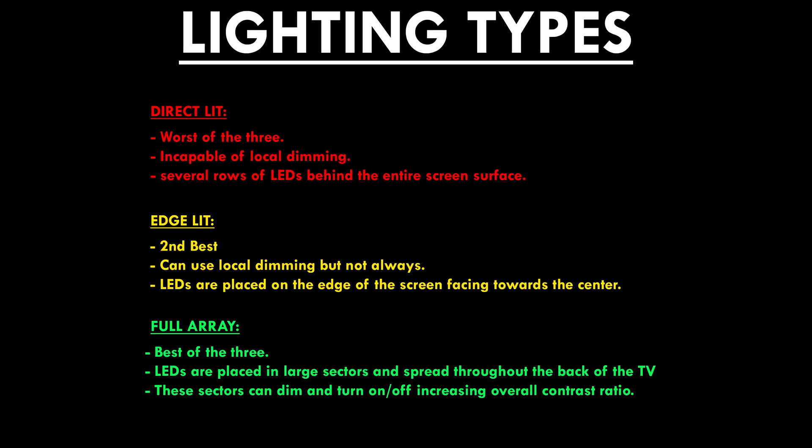Next are the lighting types. There are three types: direct lit, edge lit, and full array. Direct lit uses several rows of LEDs behind the entire surface of the screen and is incapable of using local dimming — this is the worst of the three. Next is edge lit, which sometimes uses local dimming and sometimes doesn't; this is when LEDs are placed around the edge of the TV and point towards the center to light up an image. This is the second best.